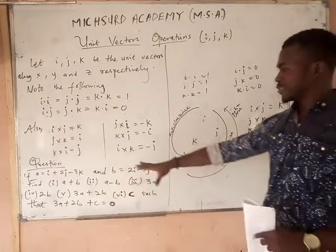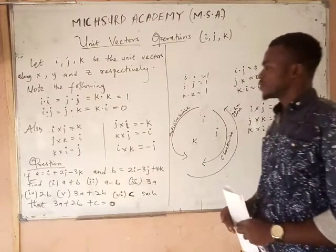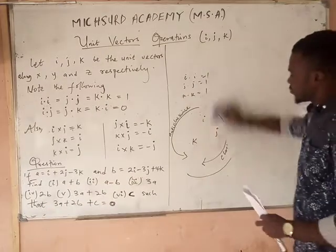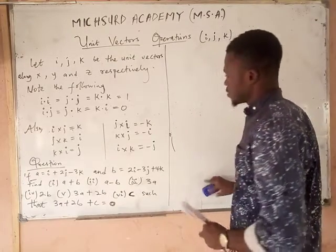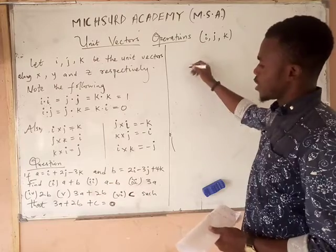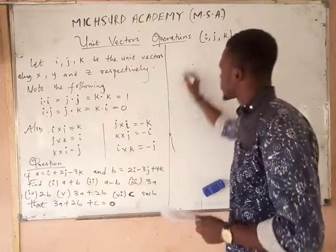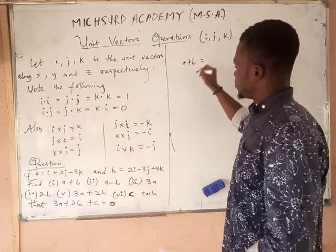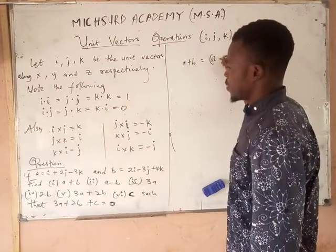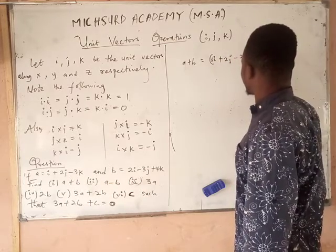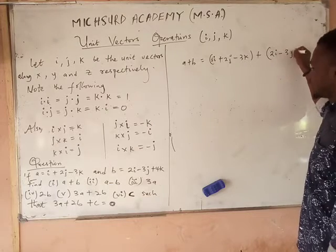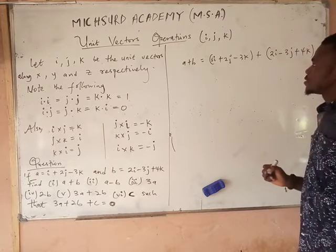So we have a question here which we are going to solve. I'll wipe this side of the board so we can solve that question. The first one we have: we have a vector a and we have a vector b. So we are actually finding a plus b. A plus b will be adding the two vectors: we have i plus 2j minus 3k, plus b which is 2i minus 3j plus 4k.